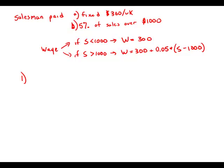Statement number one tells us the total amount that the salesman was paid last week equals 10% of his amount of sales — 0.1 times sales. Do we know which case we're in? Suppose he made less than $1,000 in sales and only got paid $300. Well, $300 would be 10% of $3,000, but if he made $3,000 in sales, he wouldn't be in this case. So it's impossible for him to be in case one — he has to be in case two.